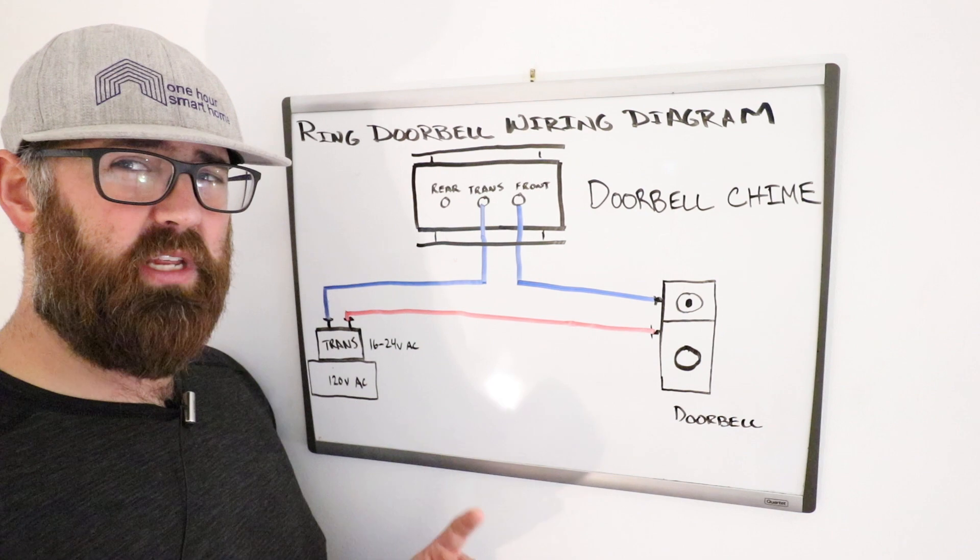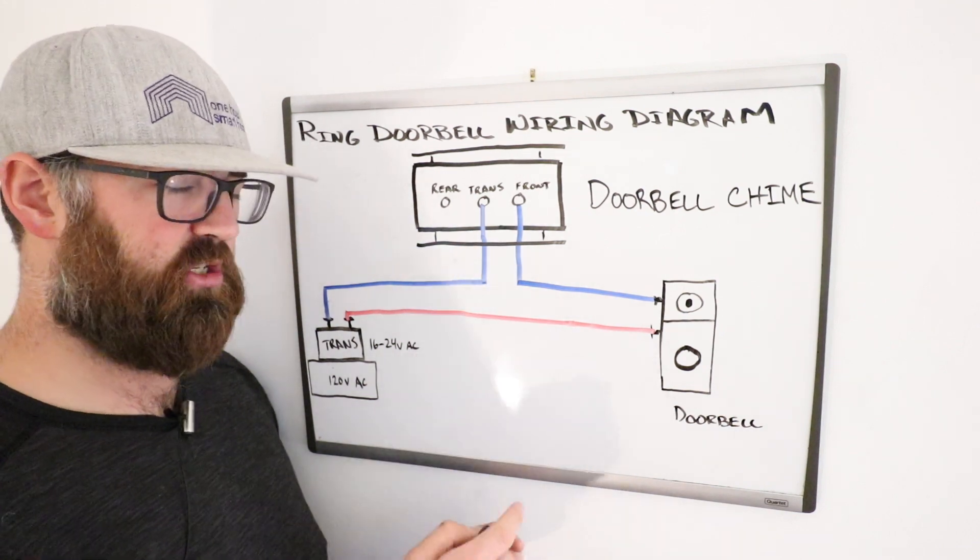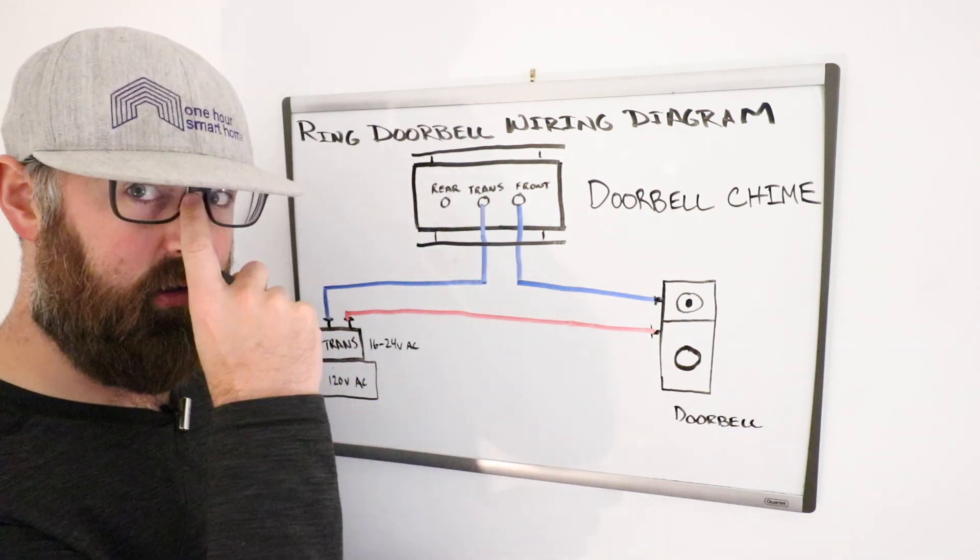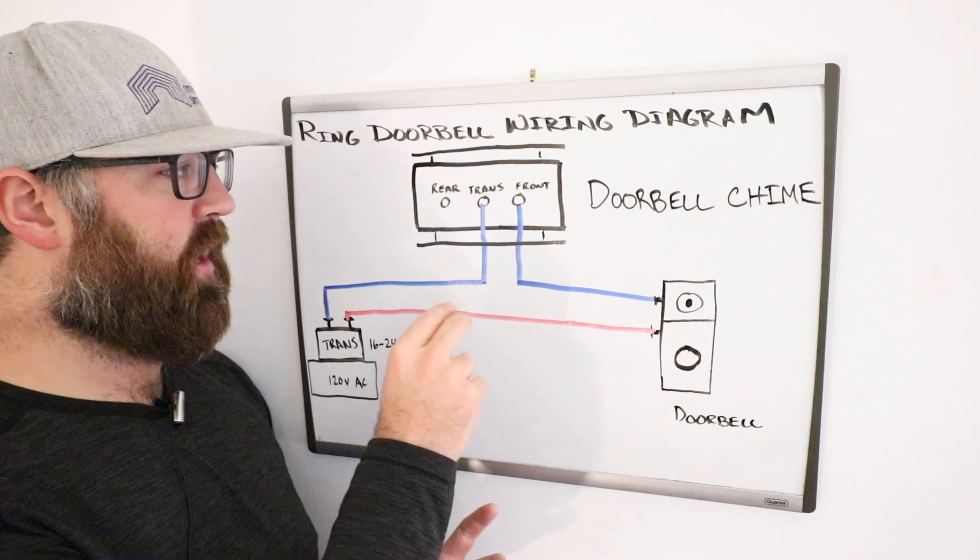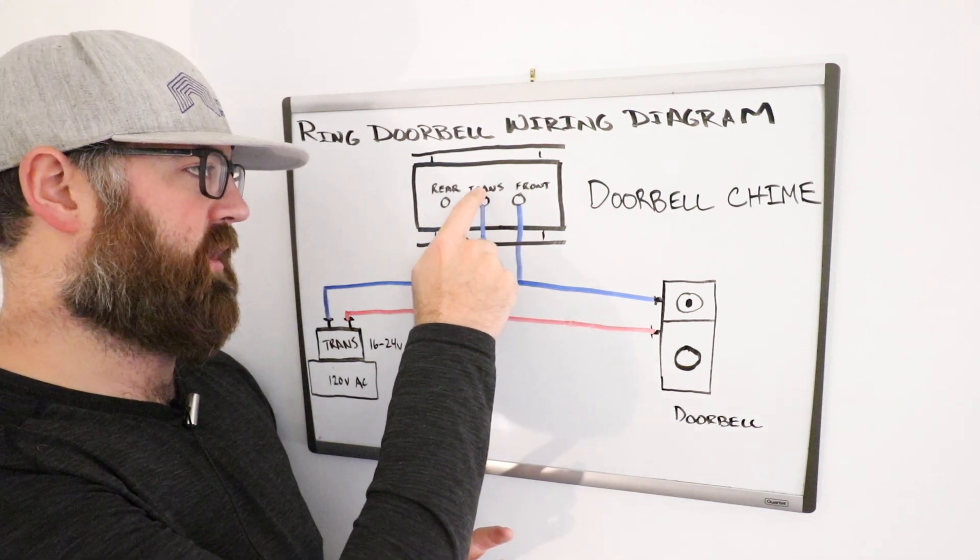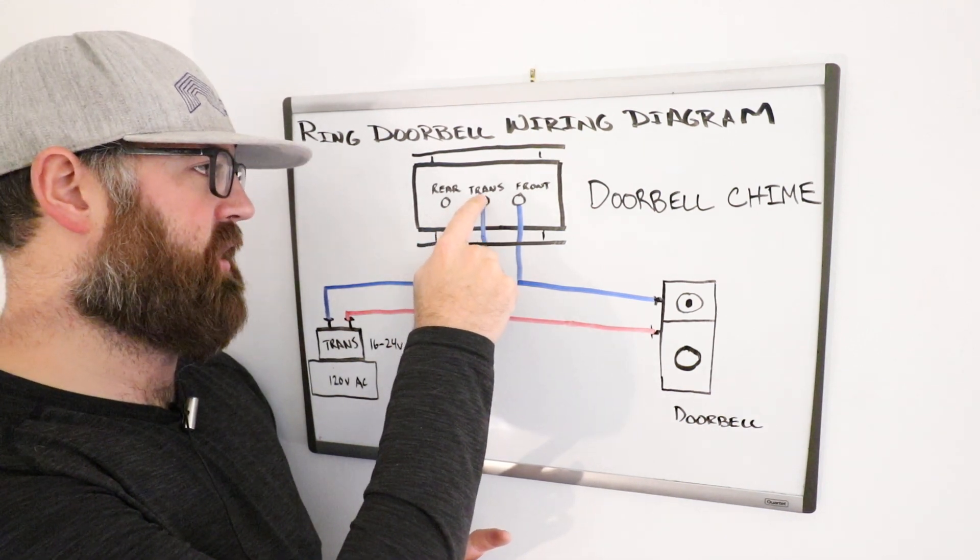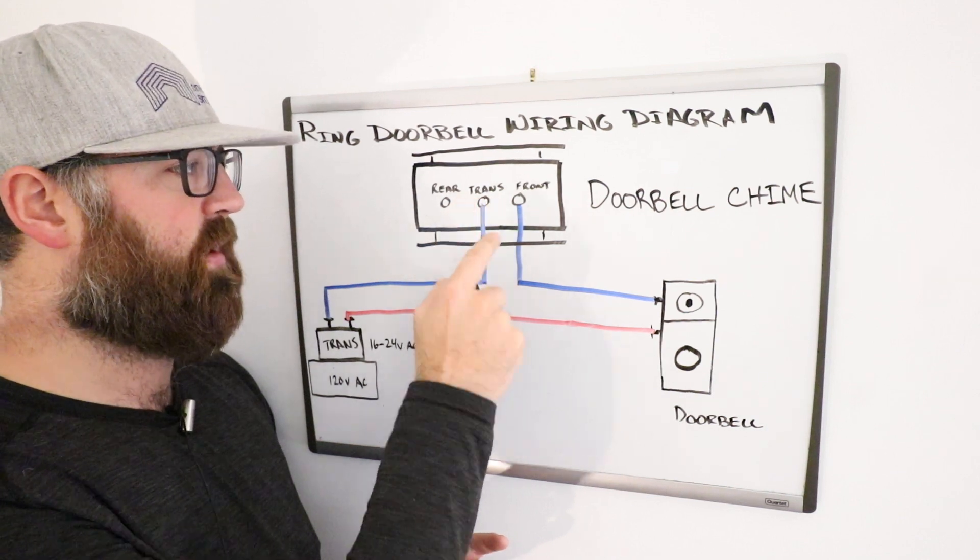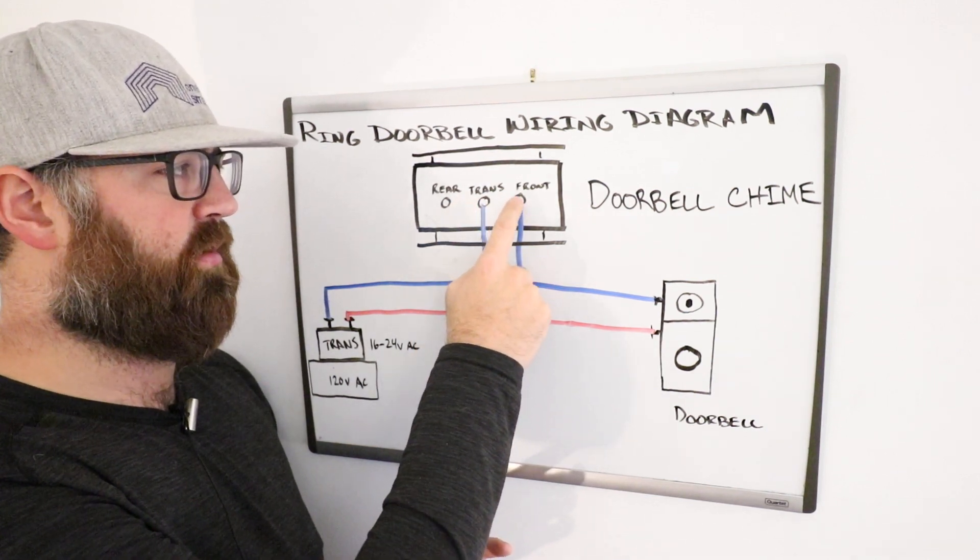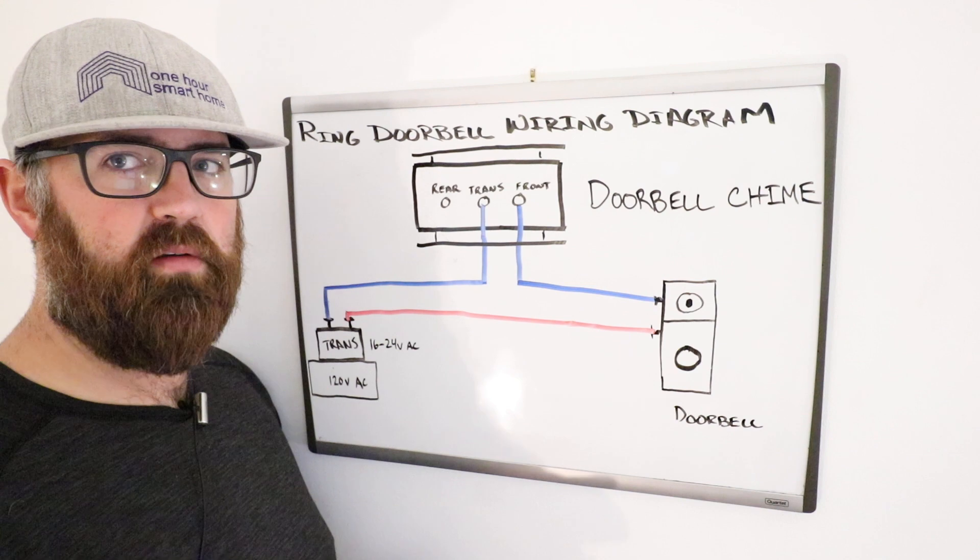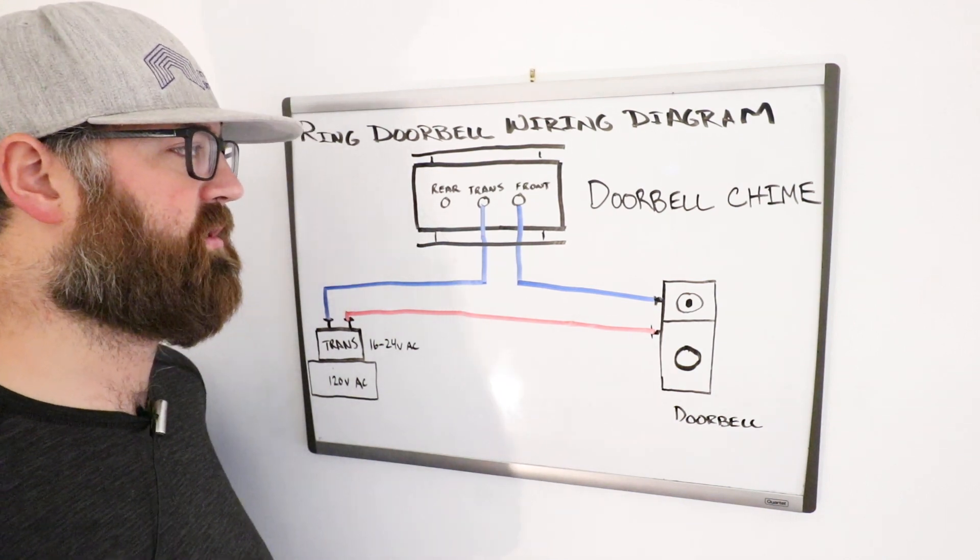So before you set up your ring doorbell, you want to make sure you take a picture of which wire goes where and you want to keep them the same, but basically this is indicating that the wire goes from the transformer to the doorbell chime. And the other one is that from the doorbell chime to the front doorbell. That's the reason behind that.